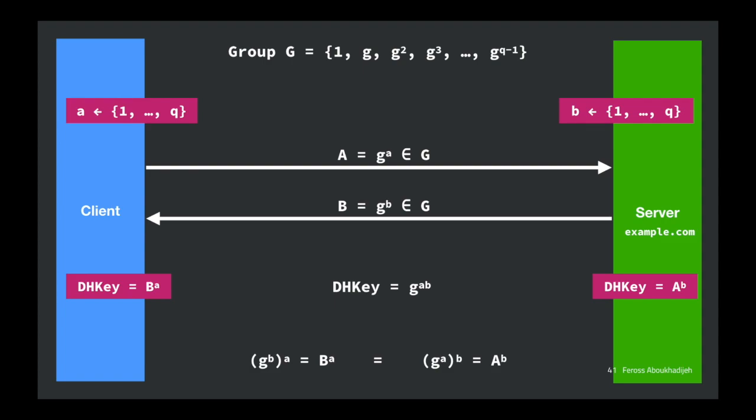Question: can't you just take the logarithm to figure out A and B? That's one of the properties the cyclic group gives us — the way the group is selected makes it computationally infeasible to do that. It's a huge number and you just can't call log on it. Take CS255 to understand exactly why. Good question.